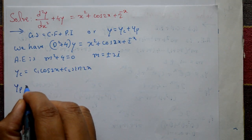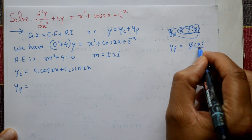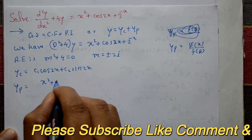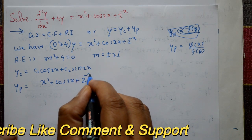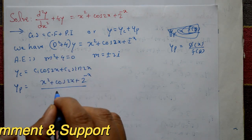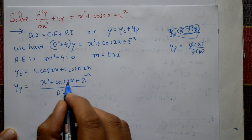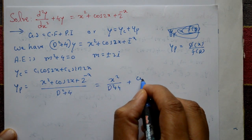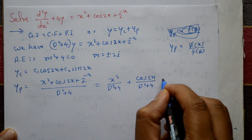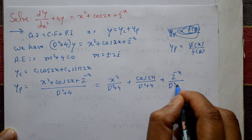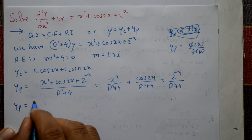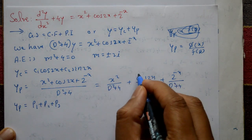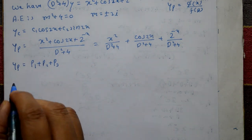Now find the particular integral. yp = φ(x) / f(D), where φ(x) is the right-hand side: x² + cos(2x) + 2^(-x), divided by f(D) = D² + 4. Separate the terms: x²/(D² + 4) + cos(2x)/(D² + 4) + 2^(-x)/(D² + 4). The particular integral is P1 + P2 + P3.